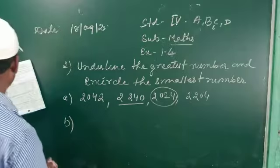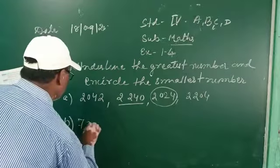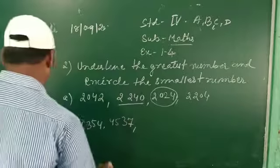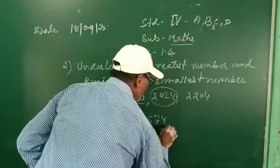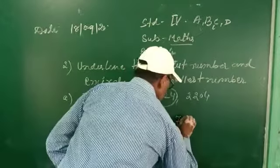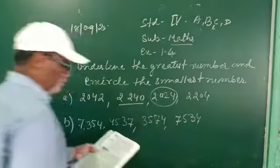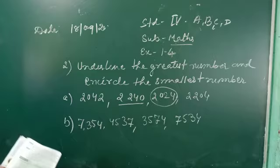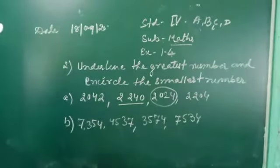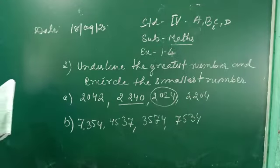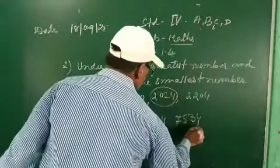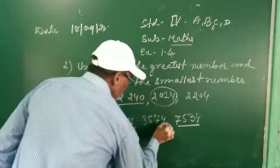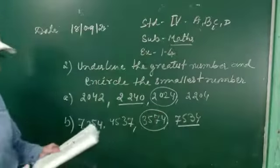Number B: the first number is 7354, the second number is 4537, the third number is 3574, and the fourth number is 7534. Watch this carefully — it is already given in your room. Check these numbers. The greatest number is the largest among all. You can put the underline on the greatest. The third number is the smallest, so you circle it.